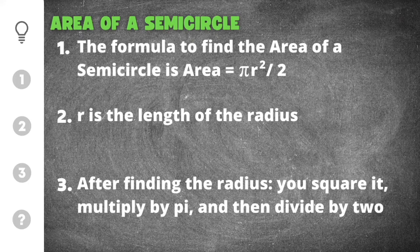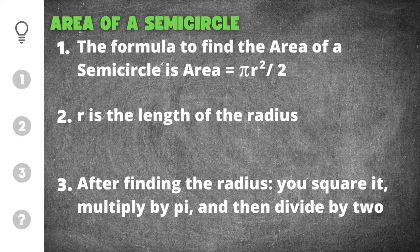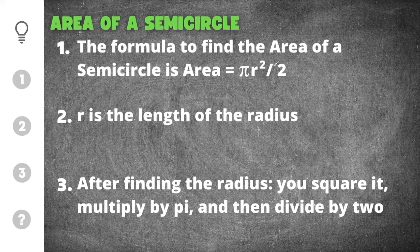There are three important tips to remember in order to find the area of a semicircle. The first one is the formula: area equals pi times r squared, divided by two. The r in this case is the length of the radius.